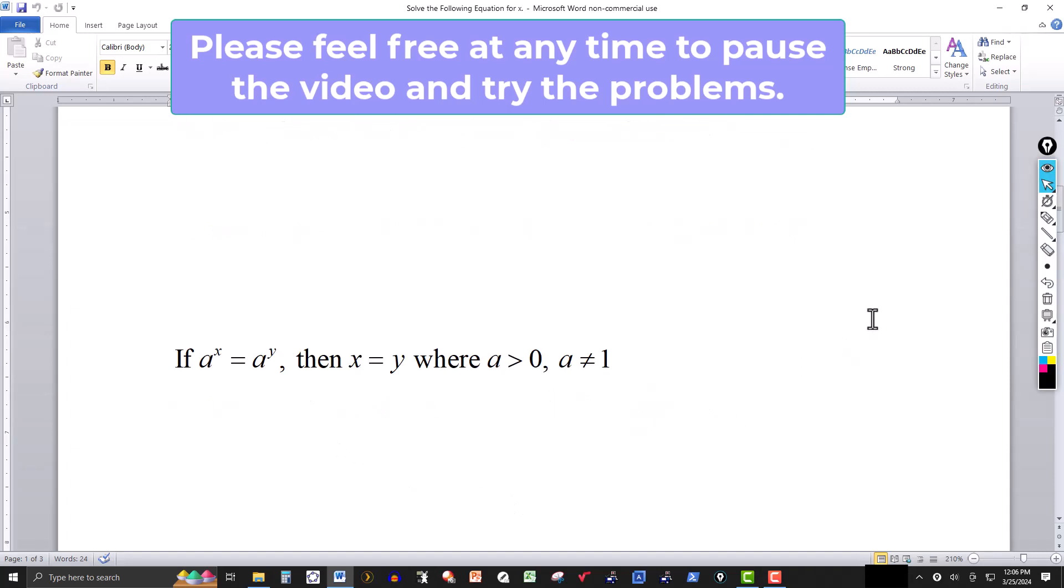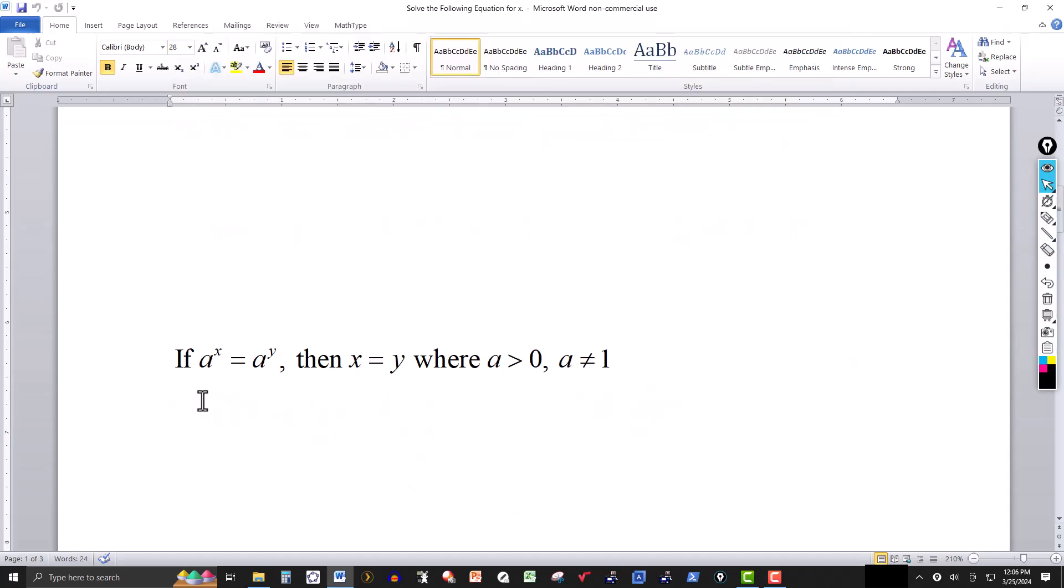So one of the main properties we're going to use will be this one for exponentials. If a to the x is equal to a to the y, in other words the base on both sides is the same, and the base is positive and not equal to 1, then the only way we can have equality here is if the exponents are equal, x has to equal y.